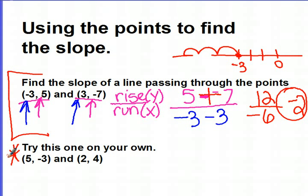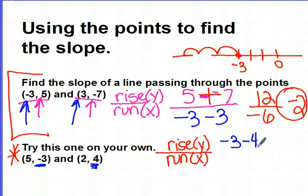Let's see how you did. Again, we're going to do the rise, which is the change in y values, over the run, which is the change in x. You should have started with the point on the left for the y value. Negative 3 minus 4. We're finding the difference in the y values.